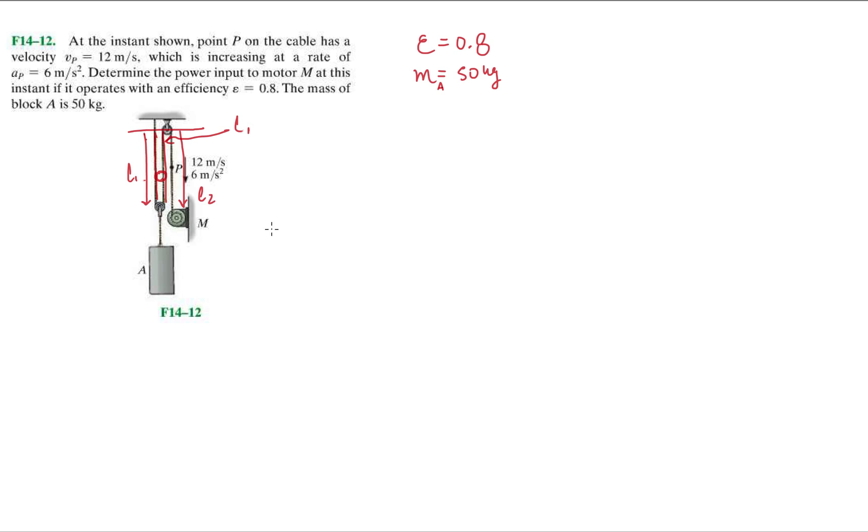Remember when we did those datum problems, we said if we have one rope, that means one equation. So I have 2L1 plus L2 equals the length of that rope. I do the time derivative: 2V1 plus V2 equals zero, and then 2A1 plus A2 equals zero.